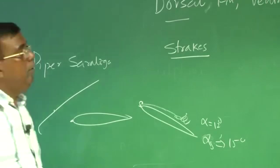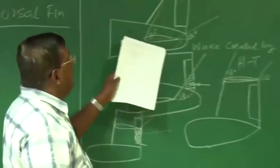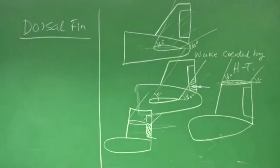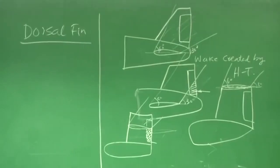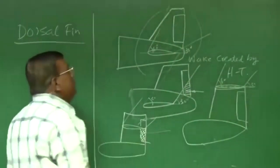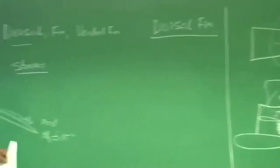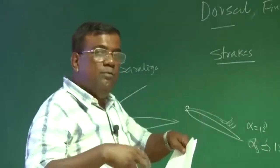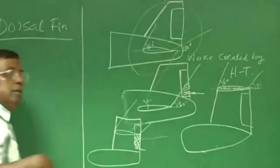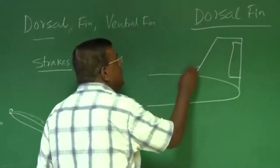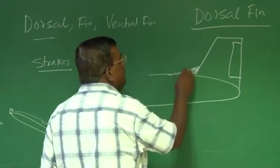When talking about lateral characteristics — stall, spin — the best way to keep the rudder and vertical tail effective is to supply that area with some vortex so that its effectiveness increases. If it is stalling at a sideslip angle of 12 degrees, let it stall at 15 degrees. So we generate vortex that impinges on the vertical fin and delays the stall. That is the philosophy — and in that philosophy, what is typically known as the dorsal fin is a strake placed on the vertical fin.